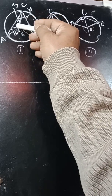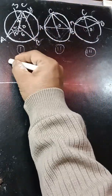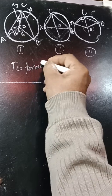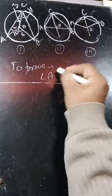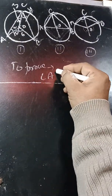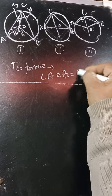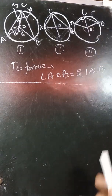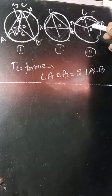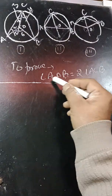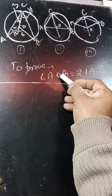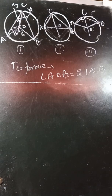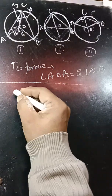Let us start the proof. First, we will write what we have to prove. We have to prove that angle AOB is twice of angle ACB. Only in the third case will we replace angle AOB with reflex angle AOB, since it is more than 180 degrees. Now let us start the proof.